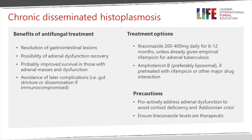Itraconazole dose is usually 200 mg/day in non-immunocompromised patients, increasing to 400 mg/day if they have HIV infection or any problems with gut absorption. It's typically given for 6 to 12 months. Isavuconazole may be given particularly in those who have received rifampicin for any length of time or have other significant drug interactions. It's important to proactively address adrenal insufficiency to avoid an Addisonian crisis. If possible, measuring itraconazole levels is also a valuable step.